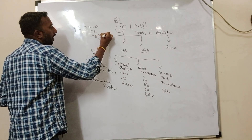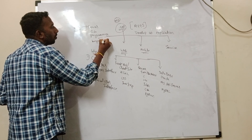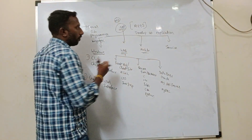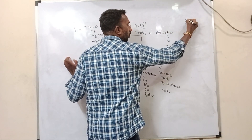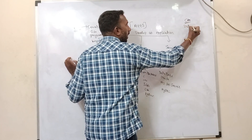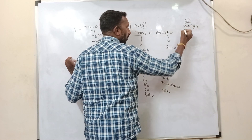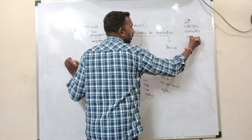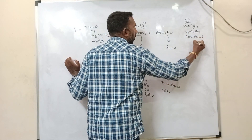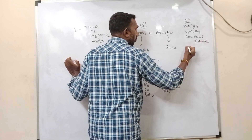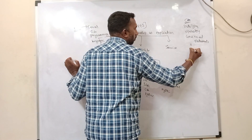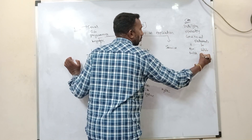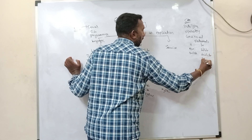Now if we enter into the C# programming language, we have many concepts. We need to know what C# is, why we should use it, and what are its advantages compared to other programming languages. In C#, you start with data types — what are the different data types available. Then operators, conditional statements like if-else and switch, and looping constructs like for loop, while loop, do-while loop, and for-each.